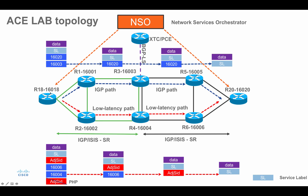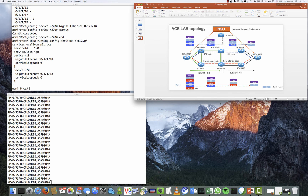Now we move to the second use case, where we provision the same type of service through NSO, but this time router 18 and router 20 will ask XTC to provide a path based on traffic engineering metrics. Specifically, the links between router 18 and router 2, and between router 6 and router 20, are configured as low-latency links. The resulting path, marked in red, will follow this low-latency route. Router 18 and router 20 will ask XTC to provide this low-latency path.